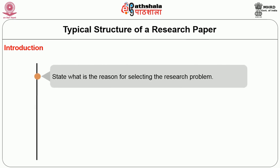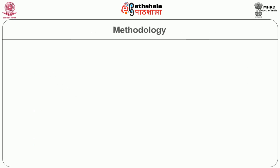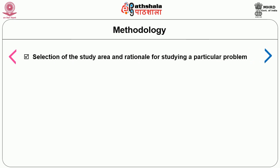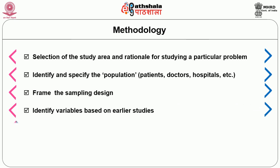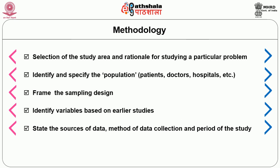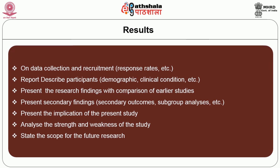The typical structure of a research paper includes: Introduction — state the reason for selecting the research problem, the gap in current knowledge, and the objectives of the study. Then Methodology — selection of the study area, rationale for the problem, identifying and specifying the population, framing the sampling design, identifying variables, sources of data, method of data collection, period of the study, estimation issues, and model specification. Then discuss the results and report on data collection, participants' demographic, clinical, or other conditions.